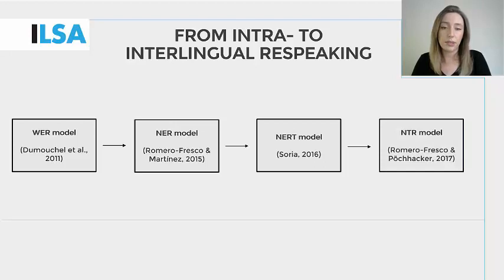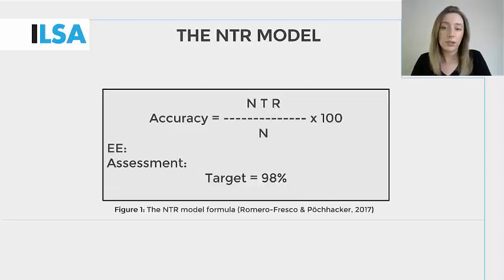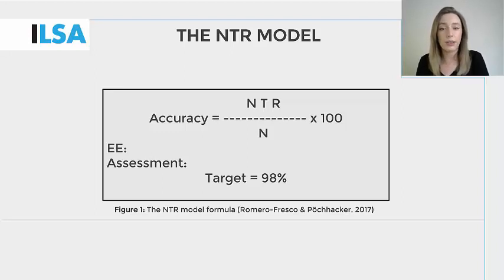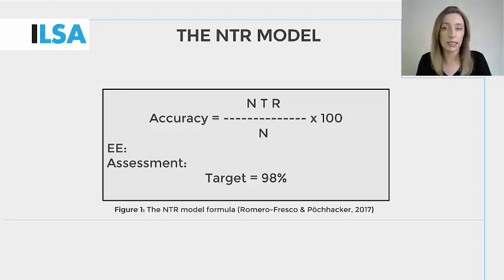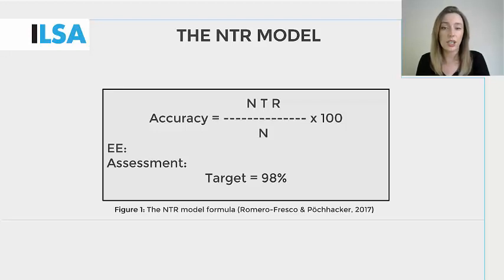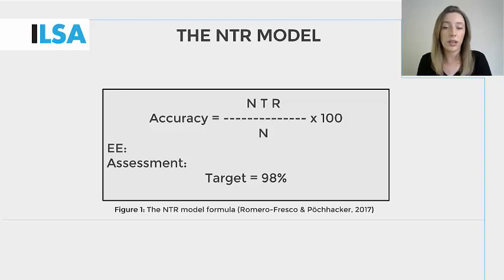The NTR model was developed to ensure that quality assessment for re-spoken texts extends to those that are produced interlingually. The NTR model uses a similar formula as the NIR model. Addition errors have been omitted to incorporate the translation element, which recognises that the shift from intralingual to interlingual live subtitling is not a similar process. The NTR model guarantees criteria for assessing the accuracy of the translation element from the original utterances to the target text. And much like the NER acronym, NTR stands for the number of words, translation errors and recognition errors.